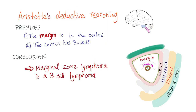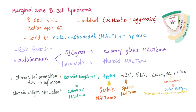Using Aristotle's deductive reasoning with two premises: number one, the margin is in the cortex; number two, the cortex has B-cells. Conclusion: marginal zone lymphoma is a B-cell lymphoma. Marginal zone lymphoma is a B-cell non-Hodgkin's lymphoma and it is indolent. This is different from mantle cell lymphoma, which is aggressive. So: marginal zone — indolent; mantle cell lymphoma — aggressive.